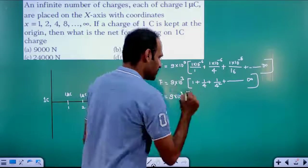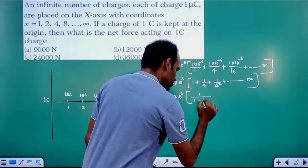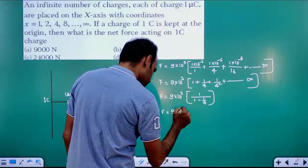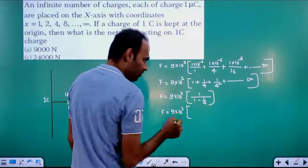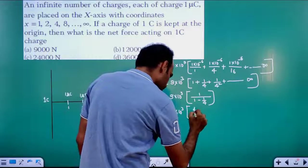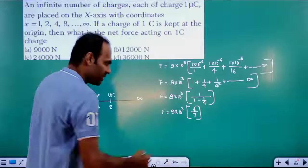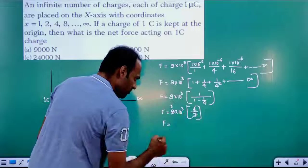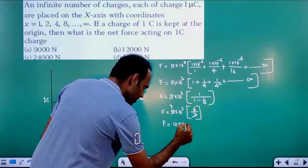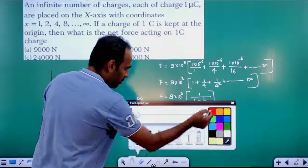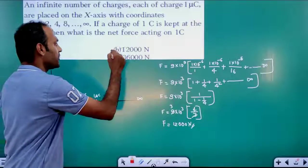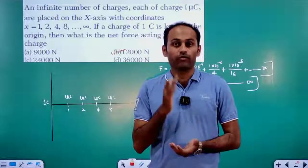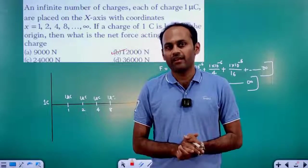So F = 9×10³ × 4/3 = 12×10³ = 12,000 Newton. The correct option is option B. That is all about the objectives on electric force. For more concepts of physics, keep watching the channel. Thank you.